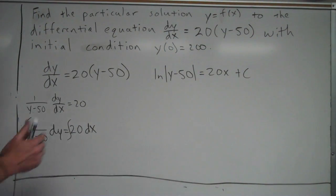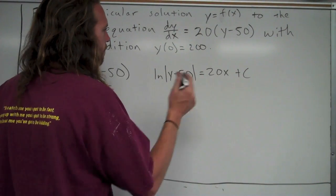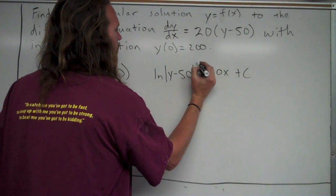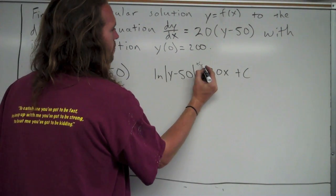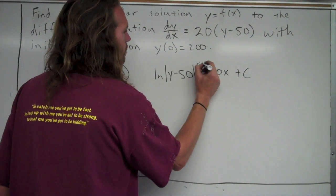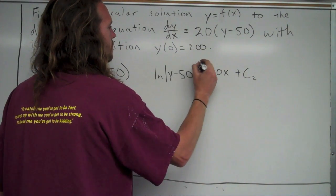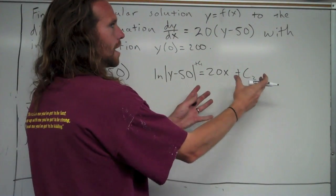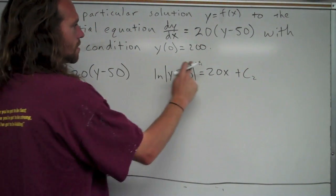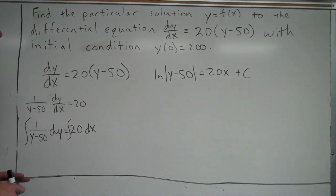Now, sometimes, I have people ask, well, why didn't I put a plus c on this side right here? Well, you could have. I could have put a plus c on this side, but then what I could have done, let's say I called this one c1 and this one c2. Then I could have just subtracted this to the other side and combined those together as one constant. That's why I didn't need to do that.